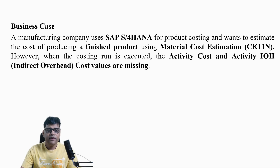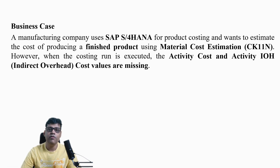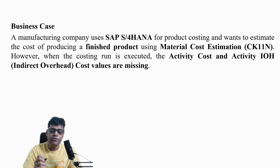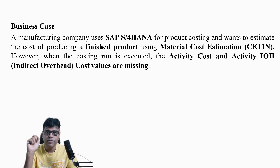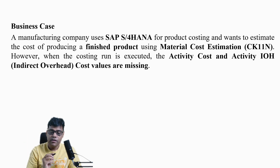Hi guys, welcome back. Someone sent me an error for clarification related to product costing, so I thought I'd explain here so it will help others as well. Let's check this business process. One manufacturing company is calculating product costing and wants to calculate the plant cost. In the cost calculation, different components will be there: material cost, activity cost, and overhead cost.